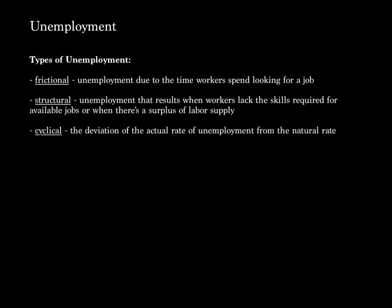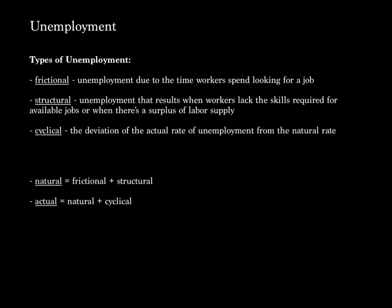There are a couple different types of unemployment. Frictional unemployment is due to the time workers spend looking for a job — it's typical for a worker to quit and take two to three weeks to find another. Structural unemployment results when workers lack the skills required for available jobs or when there's a surplus of labor supply — for example, former phone operators when that job became obsolete. Cyclical unemployment is the deviation of the actual rate of employment from the natural rate. Natural unemployment equals frictional plus structural unemployment, and actual unemployment equals natural plus cyclical.